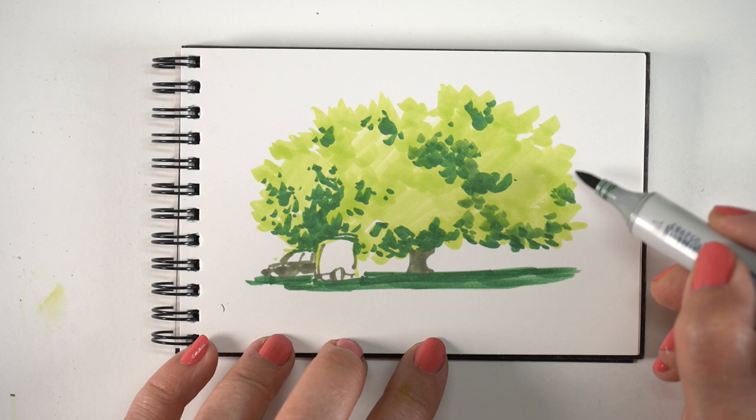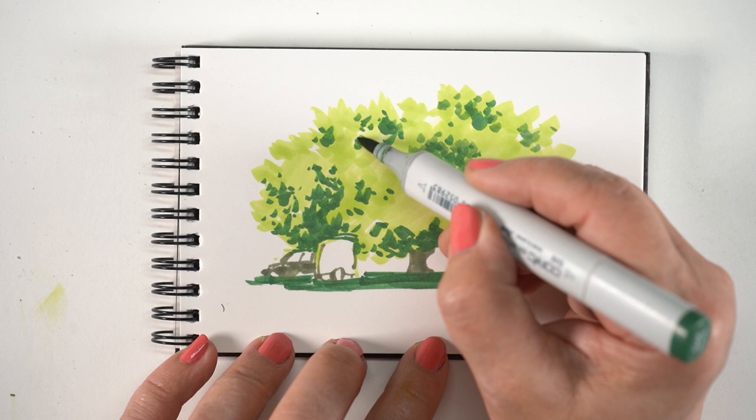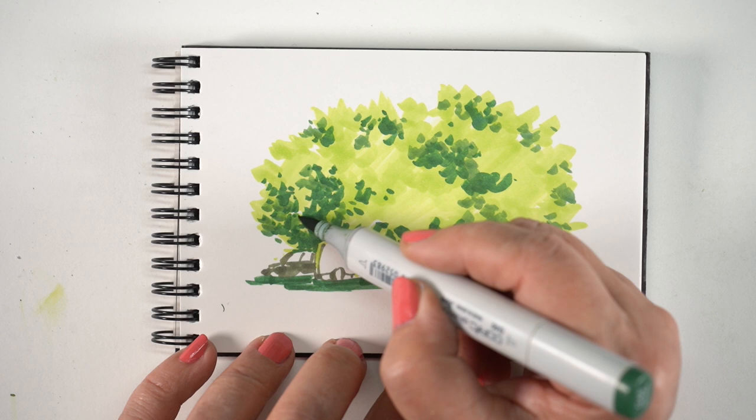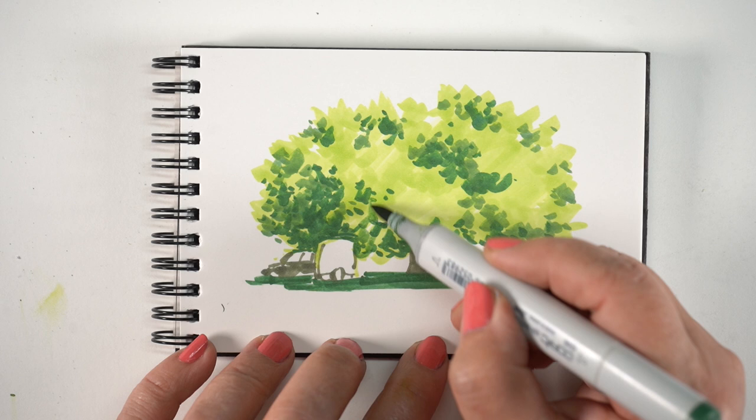Now I've got a midtone or at least more of a dark midtone that I'm putting in, in addition to the shadow color. And that one is also going to be cool. So that's going to give me the warm color underneath and two cool colors to start building up the tree.